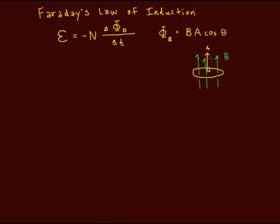If you were to rotate this loop 90 degrees, you would get no flux at all. And the way I think of that is, if I rotate it 90 degrees, the lines couldn't pass through the loop. They would be in the same plane as the loop, and they couldn't pass through the loop.